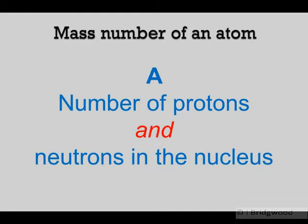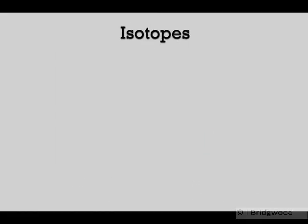Now different atoms of the same element with the same number of protons may have different numbers of neutrons. These are described as isotopes.